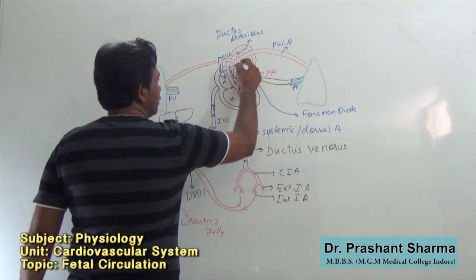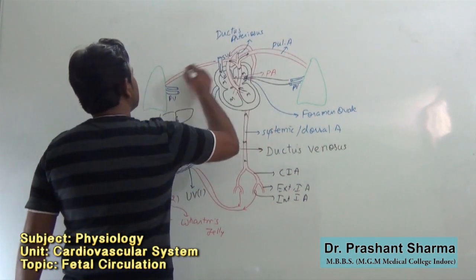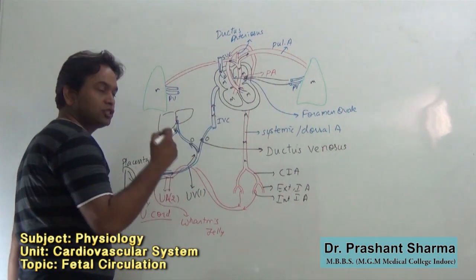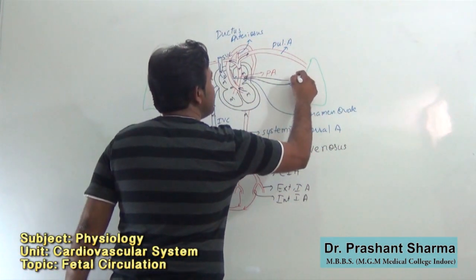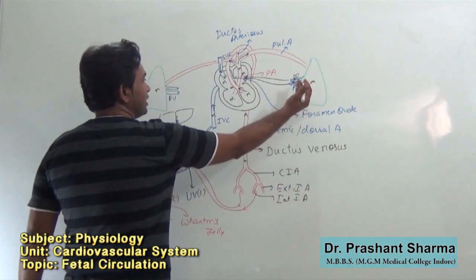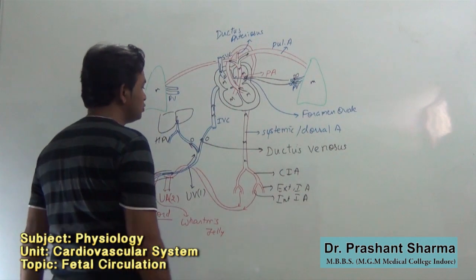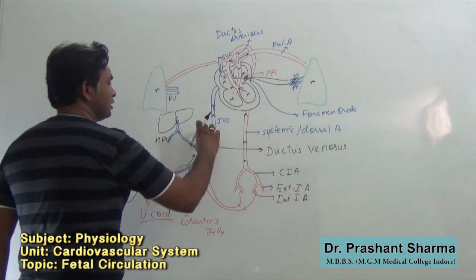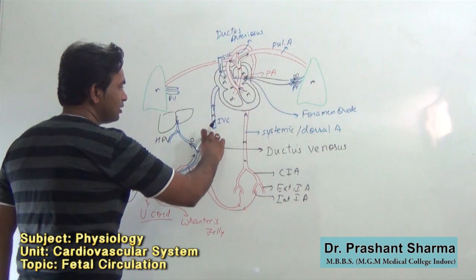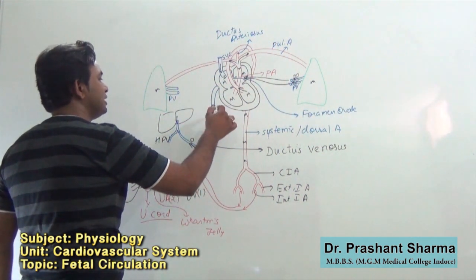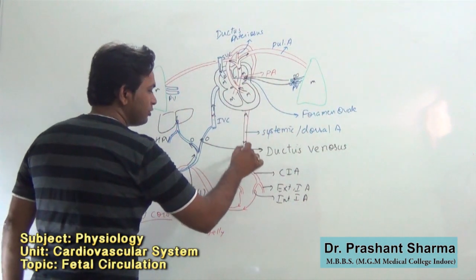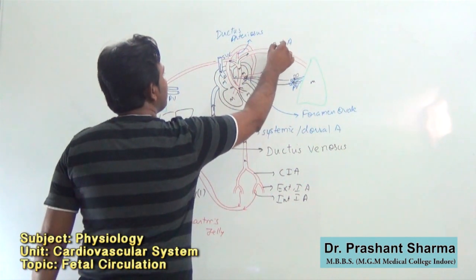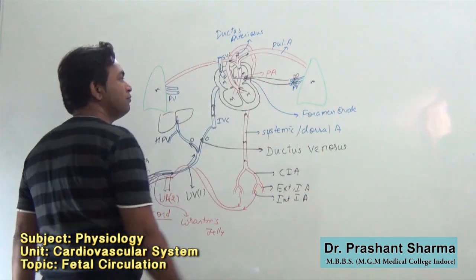By the pulmonary aorta, mixed blood enters the pulmonary arteries, and the lungs also receive mixed blood supply. After absorbing oxygen from that, the lungs deliver deoxygenated blood in the pulmonary veins, which enter the left atria. So the umbilical arteries carry oxygenated blood, and even the ductus venosus is carrying oxygenated blood. But mixed blood supply is found in the inferior vena cava, the systemic aorta, all major arteries, the pulmonary arteries, and even the ductus arteriosus.